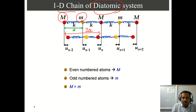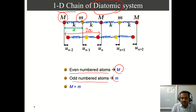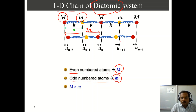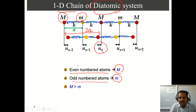Let us call the even-numbered atoms the ones having the higher mass, and the odd-numbered atoms having the lower mass. For example, an even-numbered atom (capital mass M) is surrounded by two odd-numbered atoms (small mass m). In both cases the spring constant is k. The nomenclature is the same as before: u_n is the displacement from the equilibrium position for the nth atom.